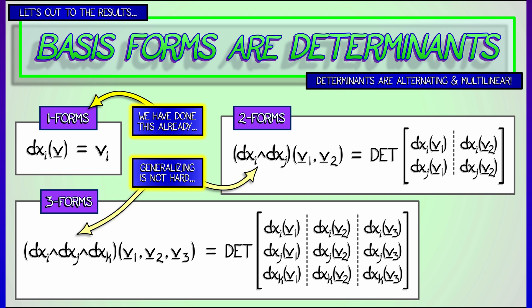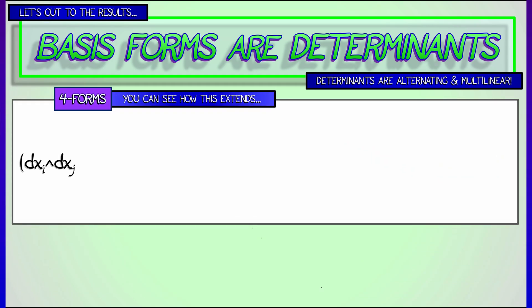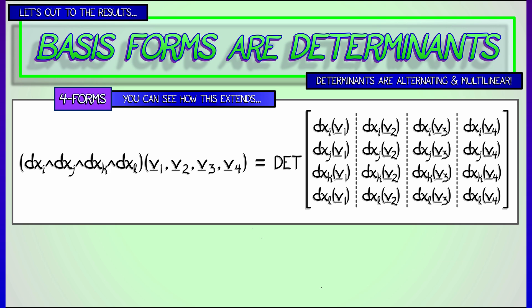Now, this is not so hard to extend to arbitrary basis forms on arbitrary dimensions. For example, if we wanted to look at four forms, then the only difficulty is coming up with enough letters. Let's say we look at a basis form, something like dx_i wedge dx_j wedge dx_k wedge dx_l. We feed that four vectors, v1, v2, v3, v4. What do we do? We build a four-by-four matrix whose rows are the i-th, j-th, k-th, and l-th components of these four vectors, respectively. Take the determinant, boom, that is automatically alternating and multilinear.